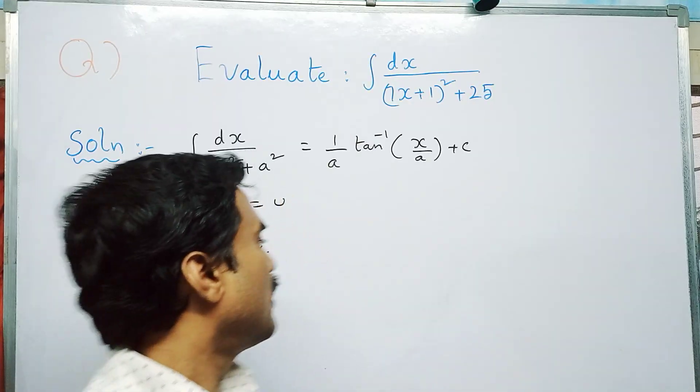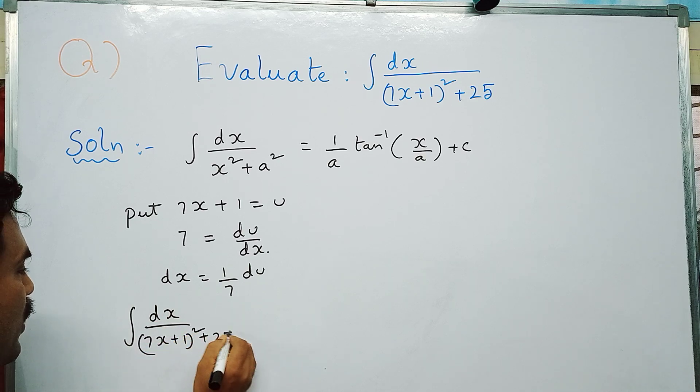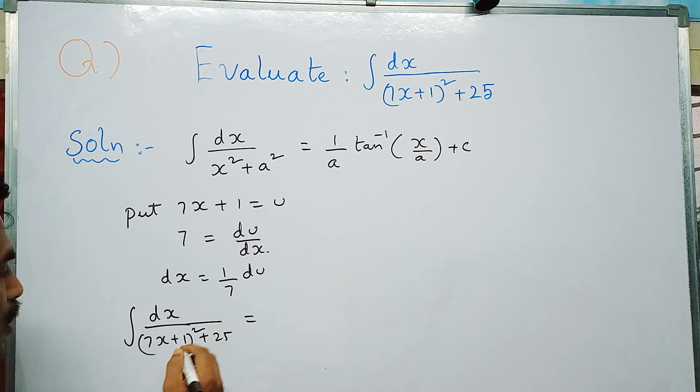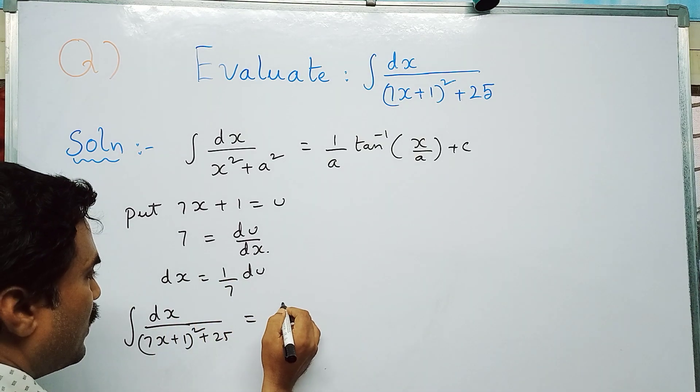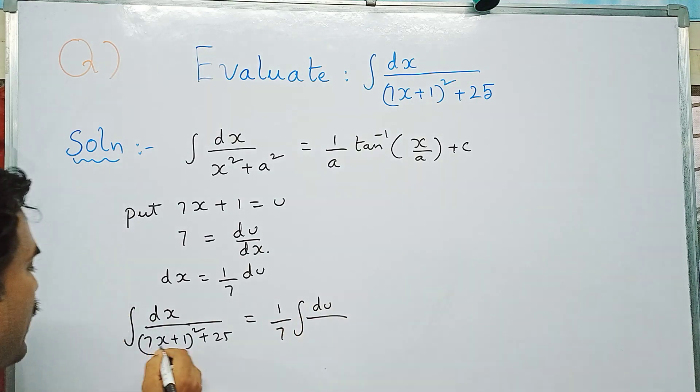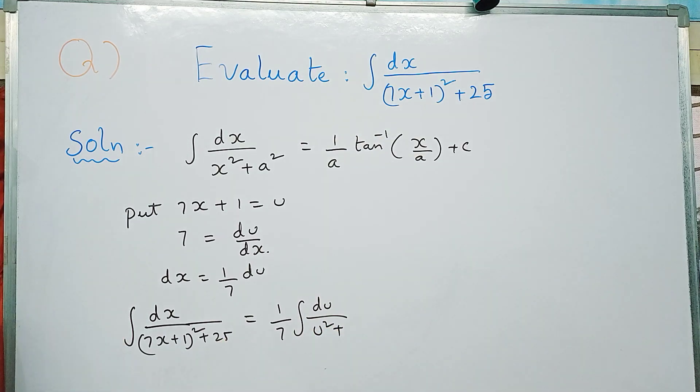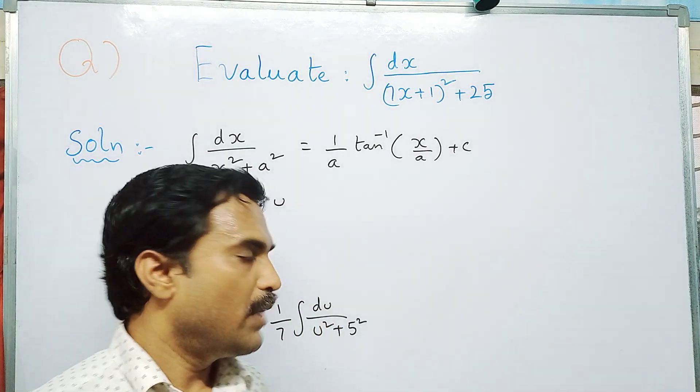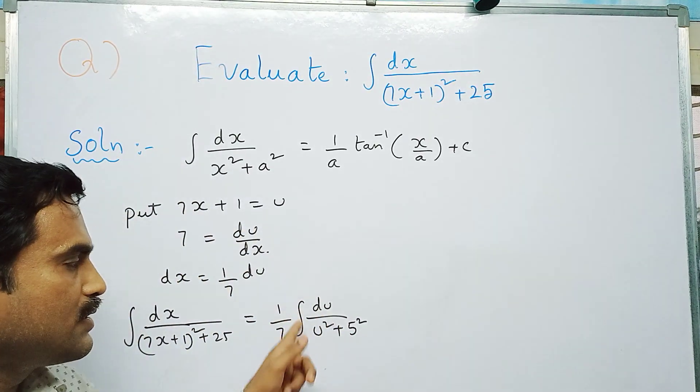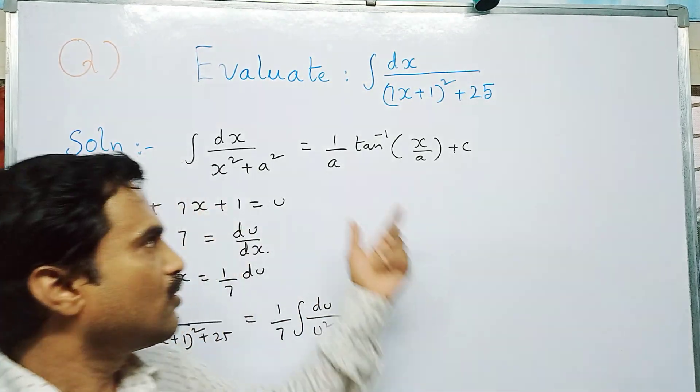The given integral becomes: integral dx by (7x + 1)² plus 25 equal to 1 by 7 integral du by u² plus 5² (since 25 = 5²). So we got 1 by 7 integral du by u² plus 5². This integral is of the form integral dx by x² plus a², so now we apply the formula.